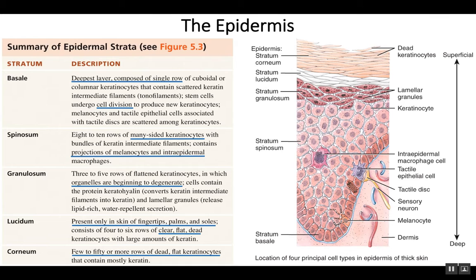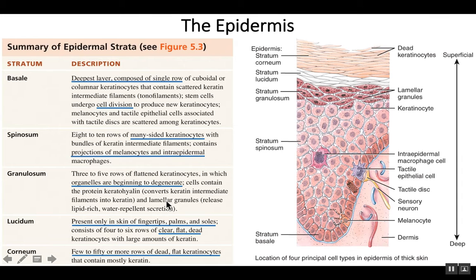The organelles begin to degenerate and go away, but the cells are still very protective to the overall skin and still have a lot of keratin. They also have granules — little clumps of material containing waterproofing lipids — which give the layer a slightly darker color. It's called the granulosum because of these little granules, which are compartments of lipids inside the cells. The cells completely die once pushed past the granulosum.